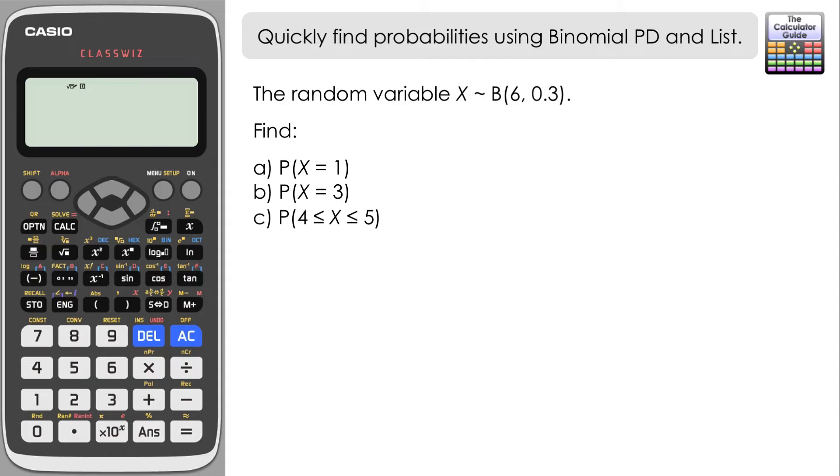And that's going to be useful for us when we get the information from the list from the Casio ClassWiz. So we're going to use binomial probability distribution and the list feature on the FX991EX to help us out with this one.